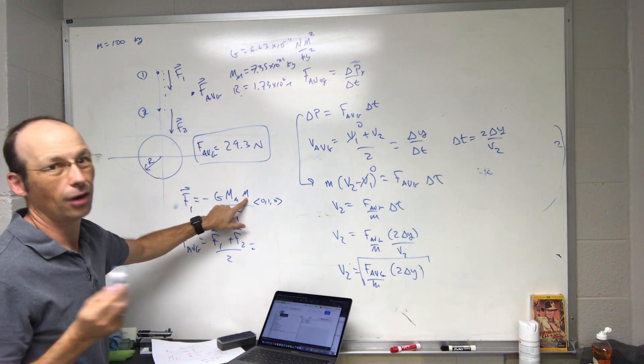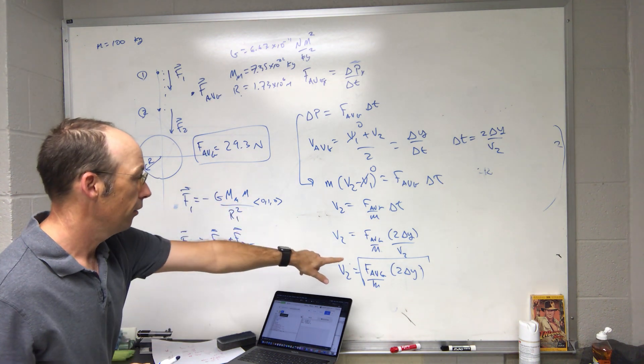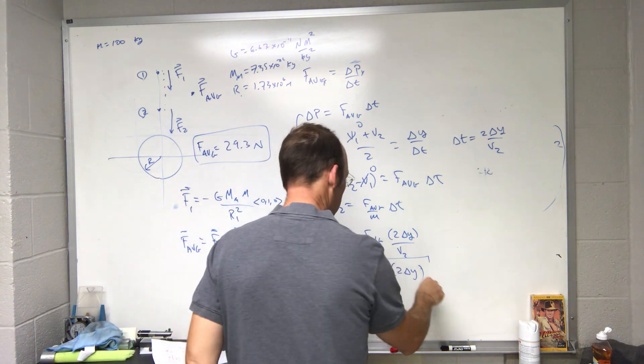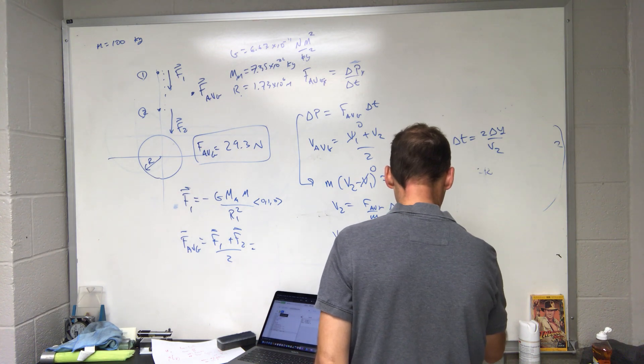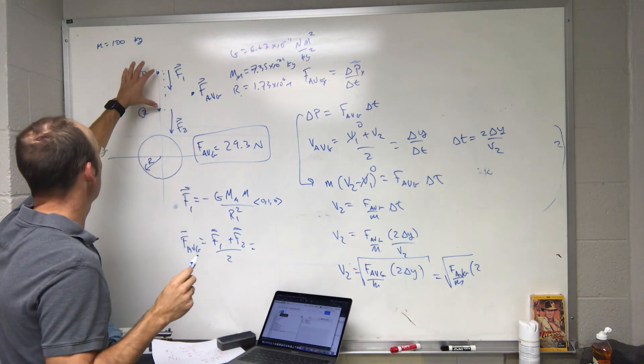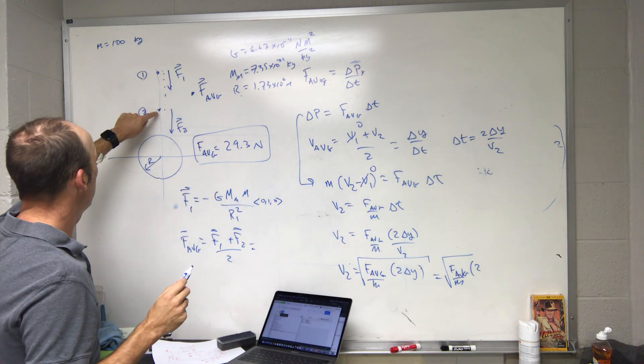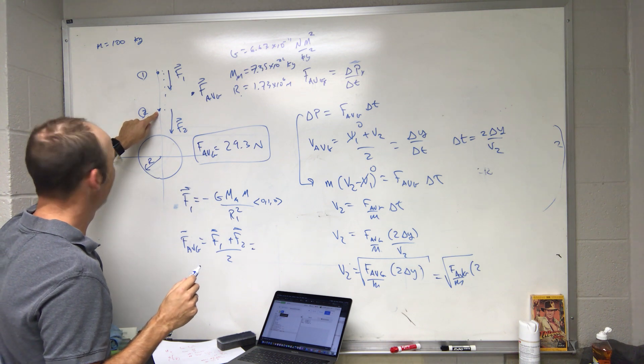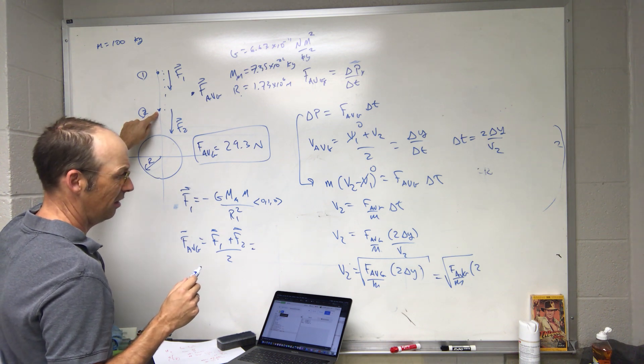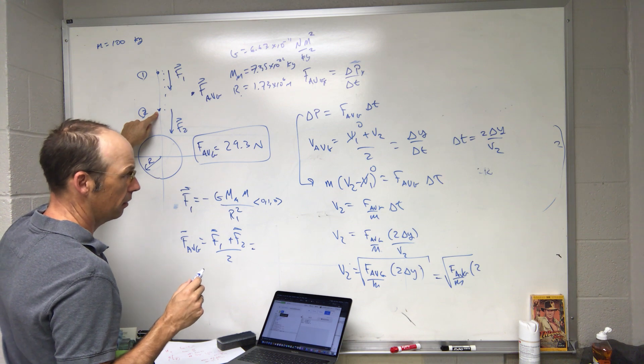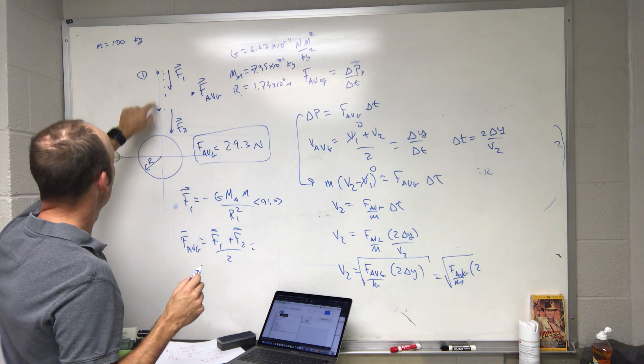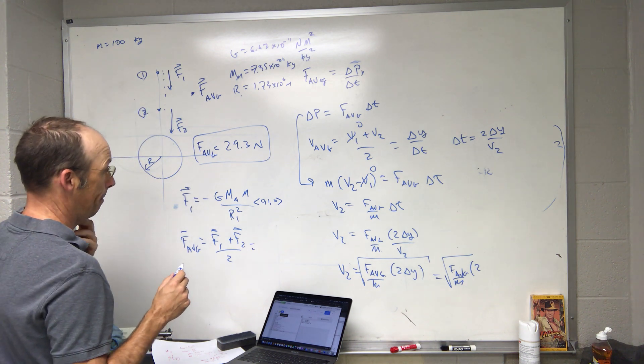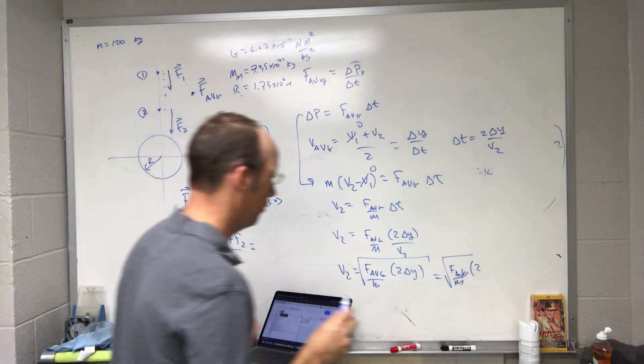And you'll notice that when I divide by the mass over here, it's going to really cancel whatever I put there. So now I get this is going to be equal to the square root of F average over m times 2, and then delta y is going to be equal to r2. I've already taken into account the direction I think, so r2 is r minus, so I think this is just going to be r times 2 times r.